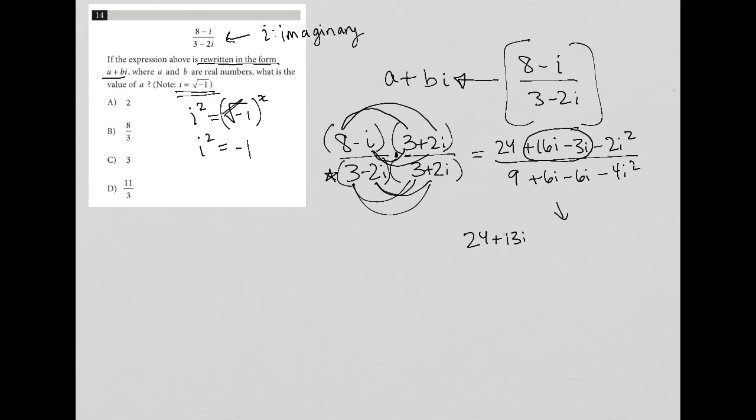So that means that I'd have 24 plus 13i and then minus 2 times negative 1 all over. These two things cross out, positive 6i minus 6i. And again, I have another i squared here. So I'd have 9 minus 4 times negative 1. So continuing to simplify this way, just for space,